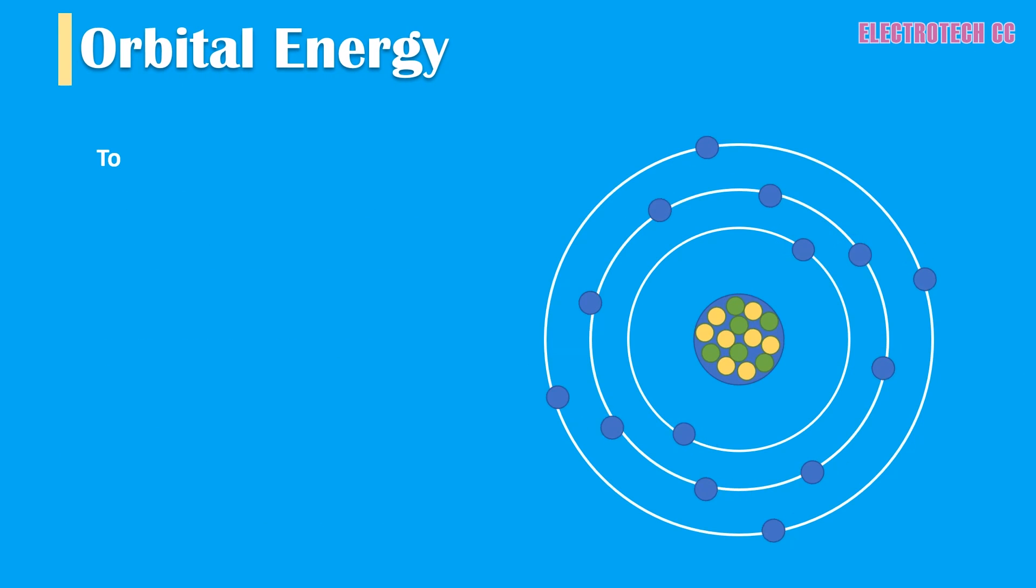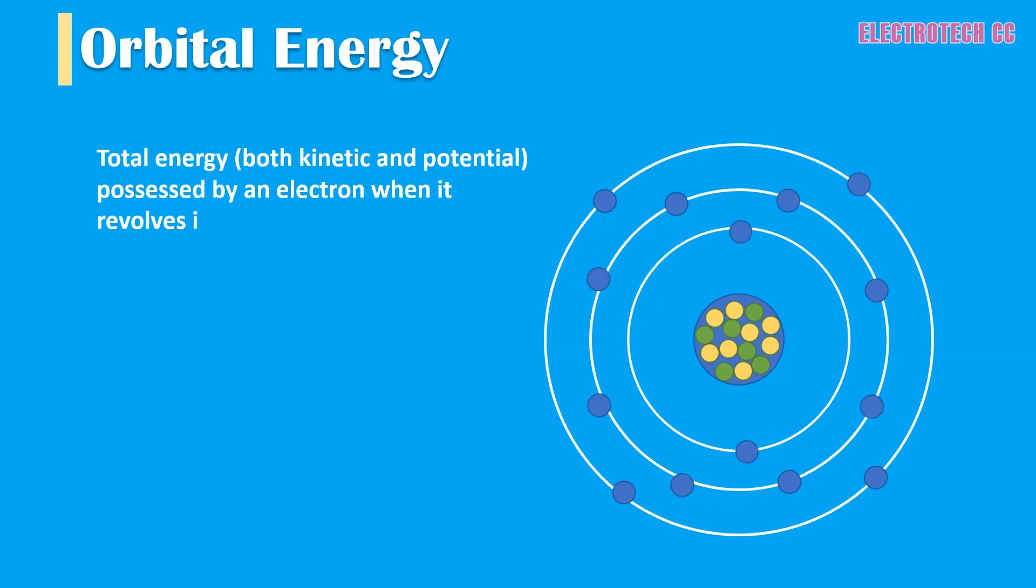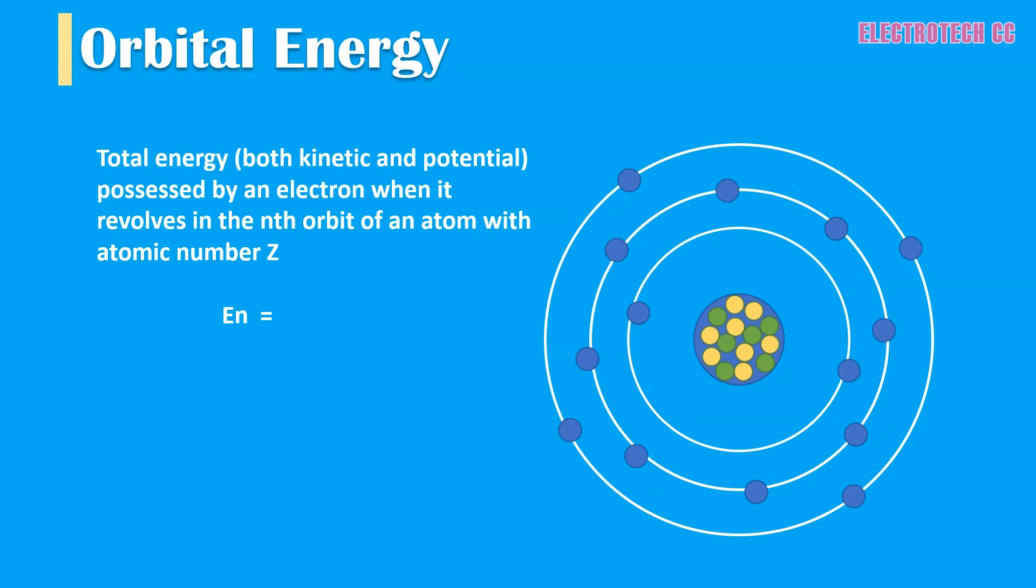Next is energy of the orbit. The total energy possessed by an electron when it revolves in the nth orbit of an atom with atomic number Z is given by En equals minus 13.6Z divided by n², where n is the order of the orbit, in electron volts. Now let us discuss some important facts of atomic orbits. The total energy of an electron is negative—that is, it is a binding energy.